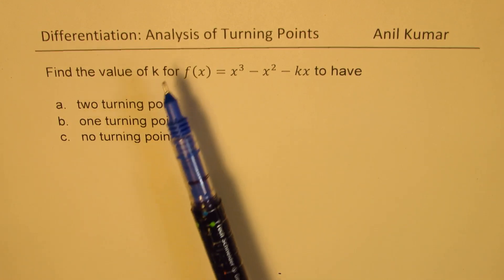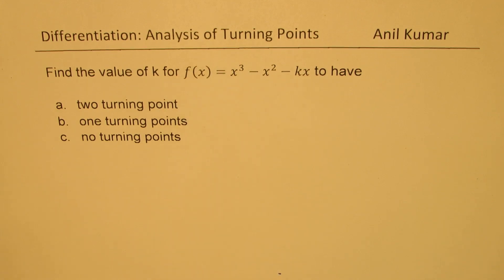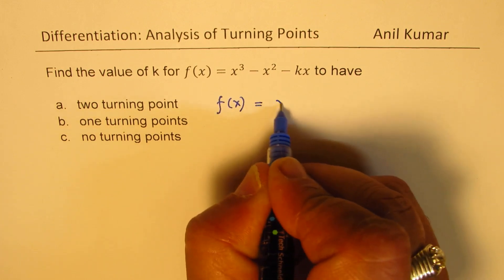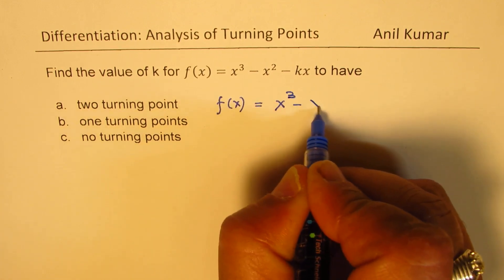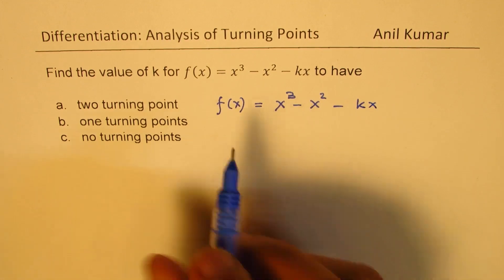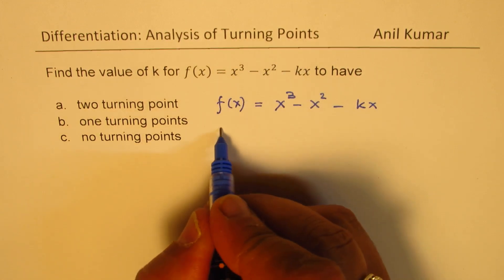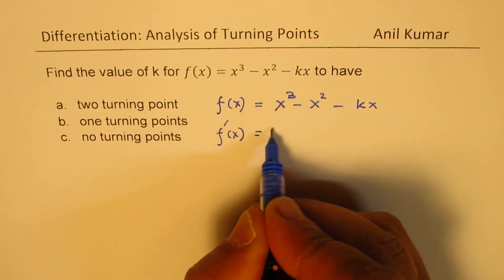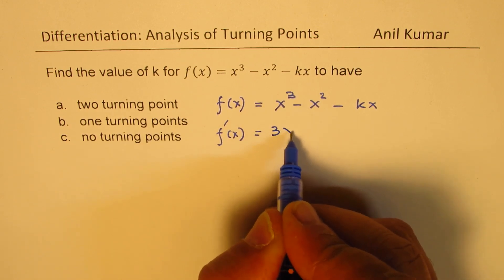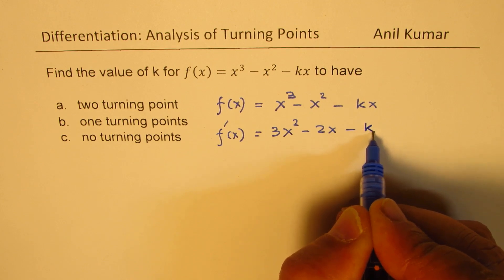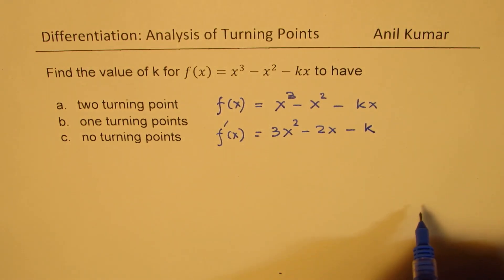Turning points can be found by finding the derivative. The function given to us is x³ - x² - kx, and the turning points occur when the derivative is equal to zero. So let's find the derivative: we get 3x² - 2x - k. That becomes the derivative.